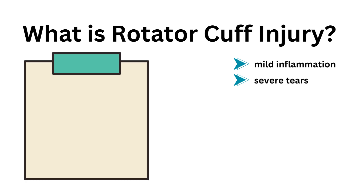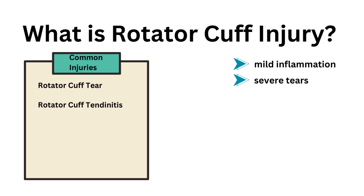The most common injuries to the rotator cuff are rotator cuff tears, rotator cuff tendinitis which is acute inflammation of the RC soft tissue, and rotator cuff tendinopathy which is chronic degeneration of the RC soft tissue. RC stands for rotator cuff.